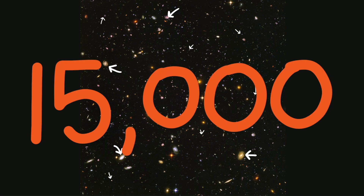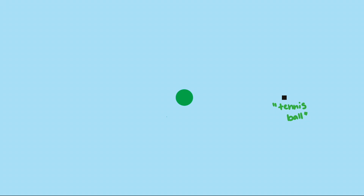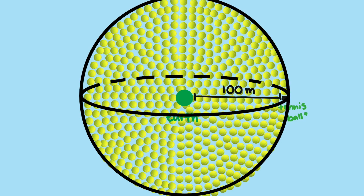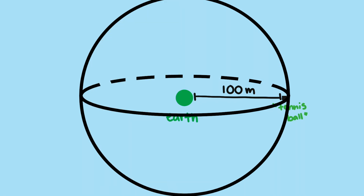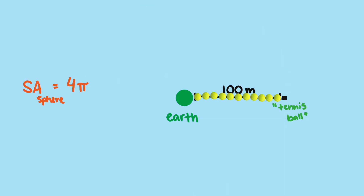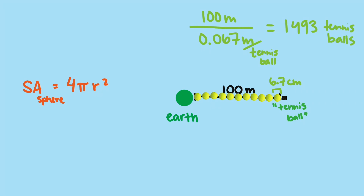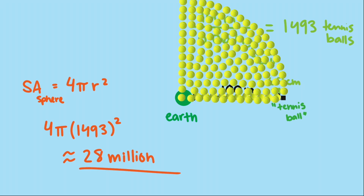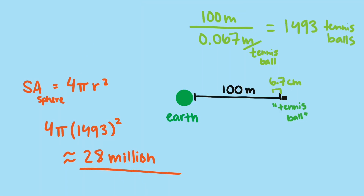Here's one picture from the Hubble Space Telescope. Some of these blobs are actually galaxies, and those specks of light you can barely see are also galaxies, just so far away they appear like a single star. There are about 15,000 galaxies in this picture. This picture is a pretty small area of the night sky. The field of view of the Hubble Space Telescope is about the size of a tennis ball from 100 meters away. So we can find how many tennis balls we would need to line a sphere of radius 100 meters. A tennis ball is about 6.7 centimeters in diameter; converting that and dividing into 100 gives us about 1,493 tennis balls. Plugging into the surface area formula, we get about 28 million tennis ball images to capture the entire sky. If the density of galaxies from the previous image is representative, then there are about 15,000 galaxies for every one of those 28 million images, giving us about 420 billion galaxies.